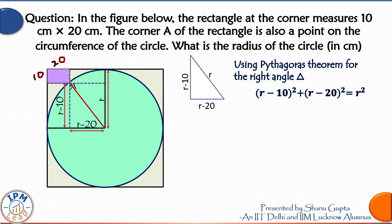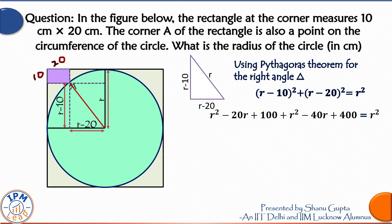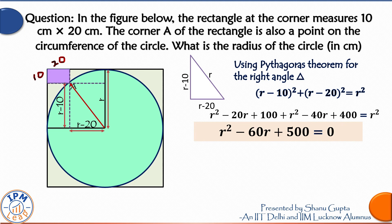And if we collect all terms on the left hand side and simplify this equation, it turns out to be R square minus 60R plus 500 is equal to 0.